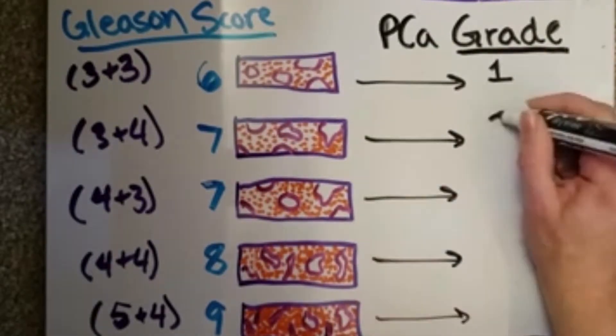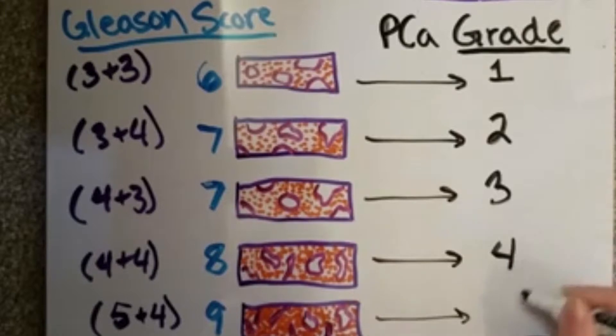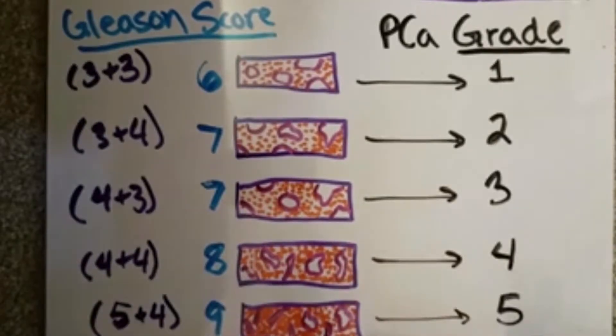Gleason 6 is grade 1, Gleason 7 is grade 2, Gleason 7 is grade 3, Gleason 8 is grade 4, and Gleason 9 or more is grade 5.